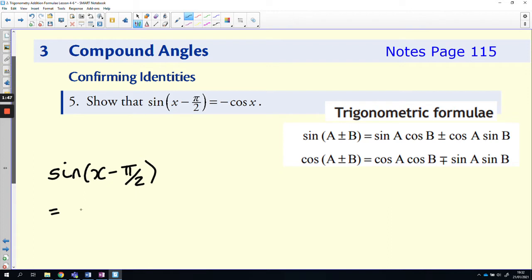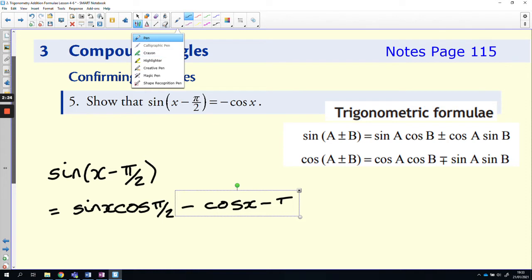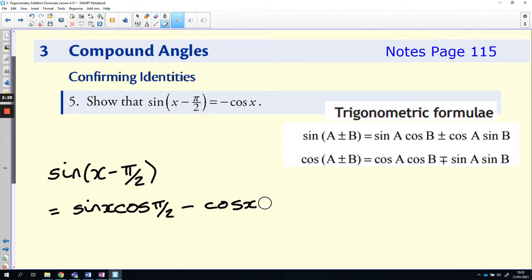So when we expand that out, we'll get sin a, but a, of course, is x for us on this occasion. And then cos b, which is π/2 for us. And then it was minus inside the bracket. Minus is on the bottom part over here. So remember, you need the bottom sign over here. So that's going to be a minus for us. And then cos a, so cos x, and then, oh sorry, that's meant to be multiply. Okay. So cos x, and then sin π/2.